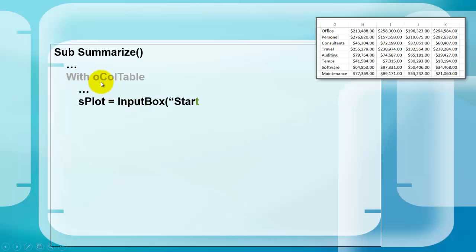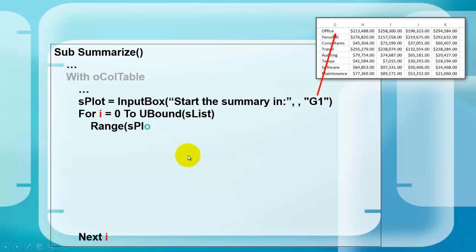Then we are still in the O call table with statement. We ask where do you want to start your summary. Let's say in G1. We loop through all the array elements from zero to the last index. We put in G1 the first elements from the array. Then the second element, third, fourth, fifth, etc.